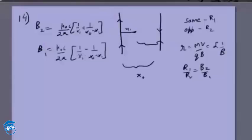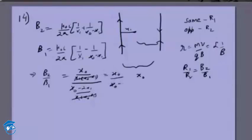The ratio B2 by B1, which is r1 by r2, will be: (x0 minus x1 plus x1) times (x1 minus x1) divided by x1 times (x0 minus x1), which simplifies to x0 by (x1 minus 2x1). These denominators cancel, giving us x0 divided by (x0 minus 2x1).